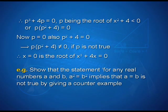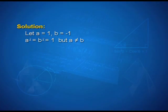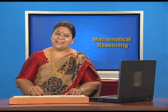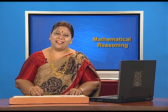Now let us look at one more interesting example. Show that the statement — for any real numbers a and b, a² = b² implies a = b — is not true by giving a counter-example. Let a = 1 and b = -1. Then a² = b² = 1, but a ≠ b. Therefore, the given statement is not true. So students, I hope you enjoyed studying this chapter on mathematical reasoning. Thank you.